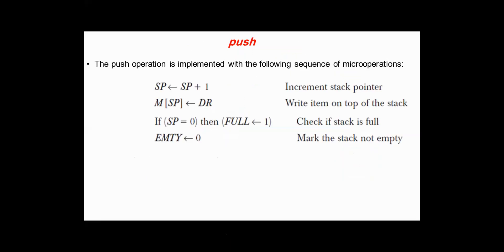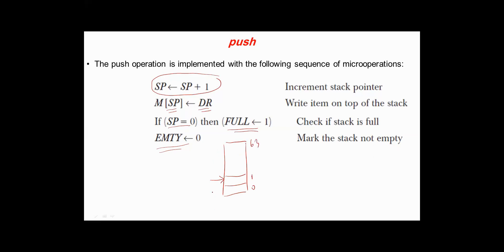According to the previous organization, the push operation is implemented with the following sequence of micro-operations: first the stack pointer is incremented by one, then the content of the data register is transferred to the memory location addressed by the stack pointer, we check if the stack pointer is zero, then the FULL flag is set to one and EMPTY is set to zero, allowing pop operations to be performed. The first item is pushed into location one, and the last item that can be pushed is stored in location zero, so when the stack pointer reaches zero this means the stack is full and the FULL flag should be set to one.